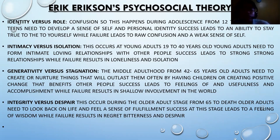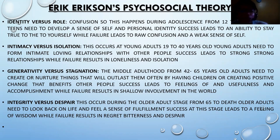Identity versus role confusion occurs from twelve to eighteen years old, where teens need to develop a sense of self and personal identity. Success leads to an ability to stay true to yourself, while failure leads to role confusion and a weak sense of self. Intimacy versus isolation occurs during young adulthood, from nineteen to forty years old. Young adults need to form intimate, loving relationships with others. Success leads to strong relationships, while failure results in loneliness and isolation.